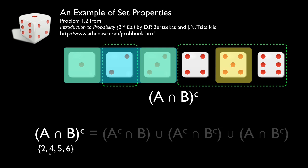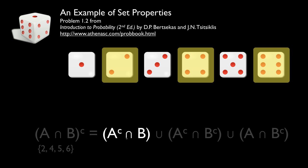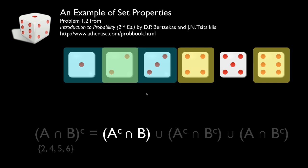Now let's look at each of the individual sets on the right side. First, we'll take the intersection of the complement of A with B. The complement of A contains the even outcomes two, four, six. B contains outcomes less than four. The intersection of those, anything covered by both, is the outcome two.